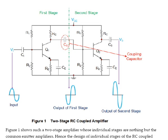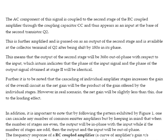In the extended two-stage circuit, the AC component of the signal is coupled to the second stage of the RC coupled amplifier through the coupling capacitor C_C, and thus appears as an input at the base of the second transistor Q2.